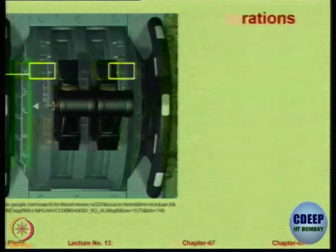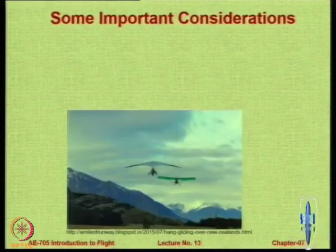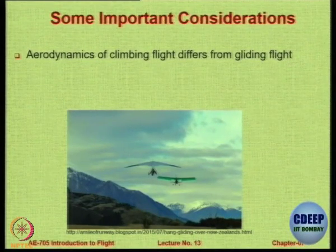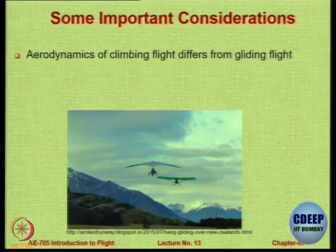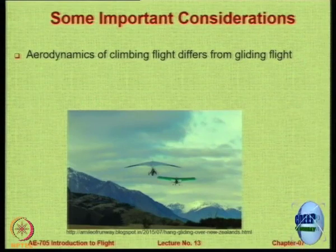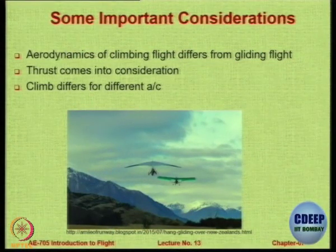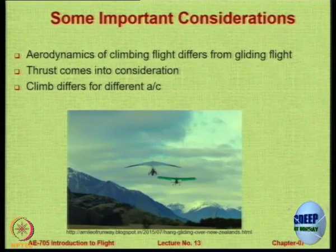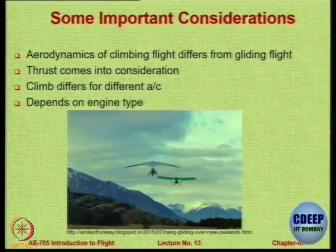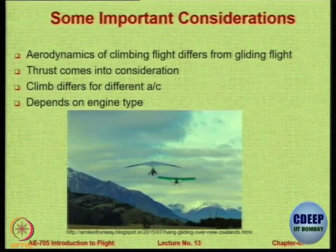This is the Airbus A320 throttle quadrant. Some people say climbing is simply the reverse of gliding — in gliding you come down, in climbing you go up — but that is not true. In gliding, gravity acts in your favour, whereas in climbing you are going against gravity, so you require thrust force to overcome it. For different aircraft there are different climb speeds and climb positions, and differences exist between a hang glider and a normal powered aircraft depending on engine type.